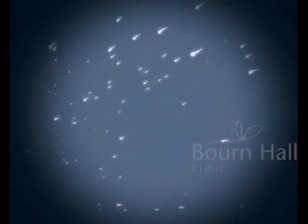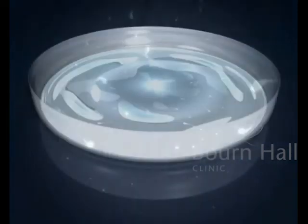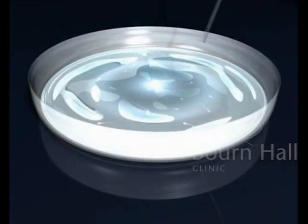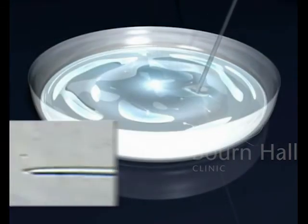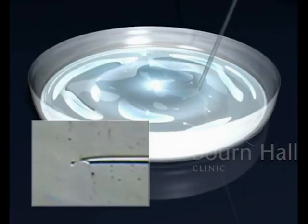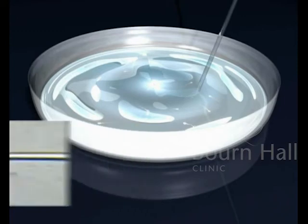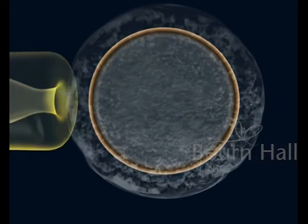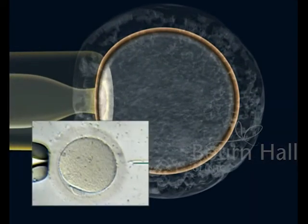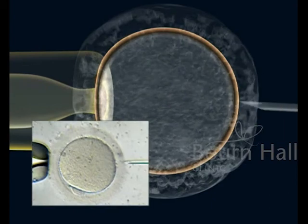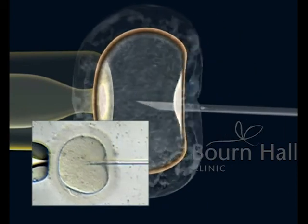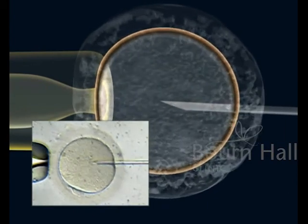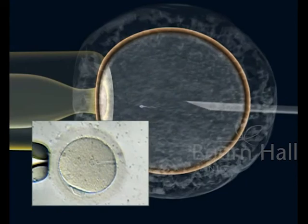In intracytoplasmic insemination, one of the best sperm is selected. The tail is immobilized and is aspirated into a fine needle. The oocyte is fixed with a micropipette, and on the other side, the needle is inserted and the sperm is injected into the oocyte.